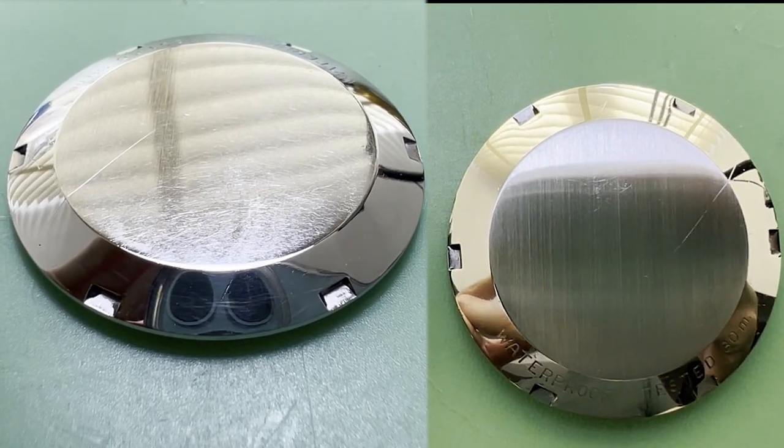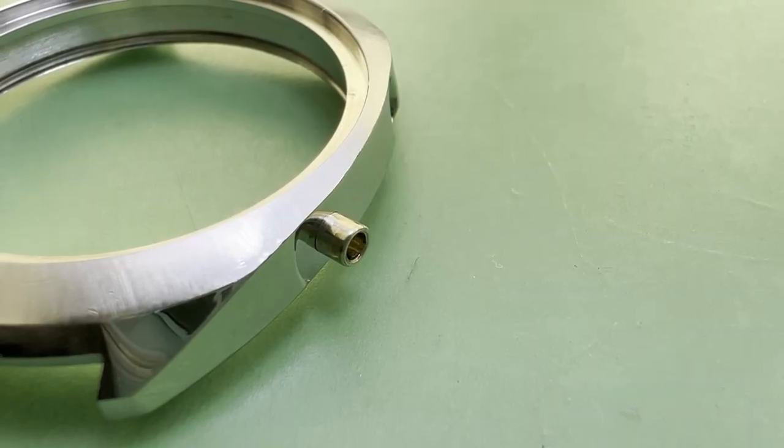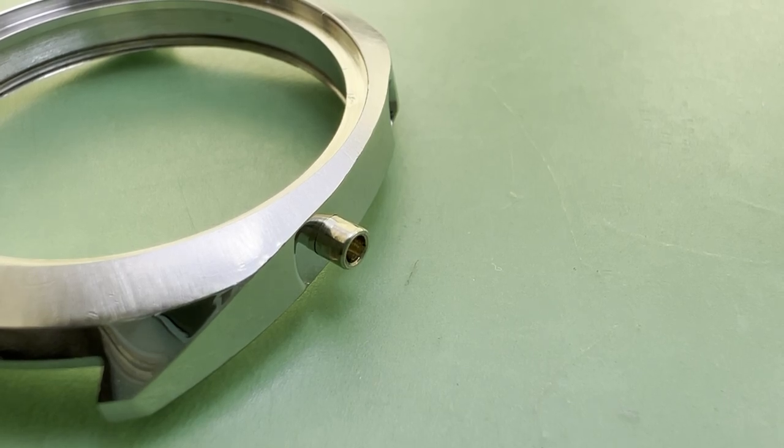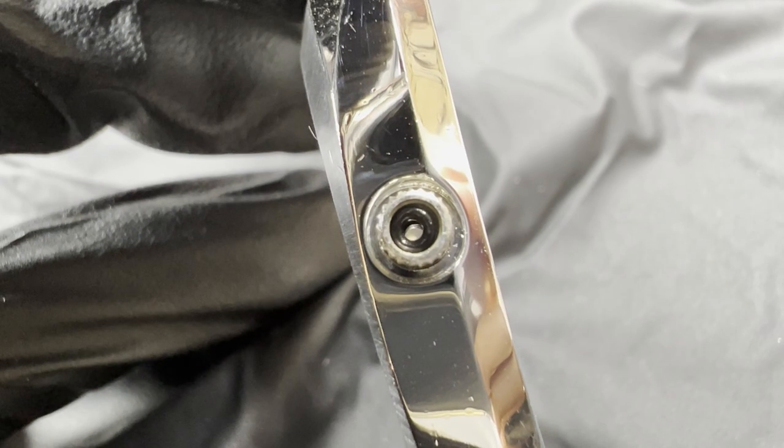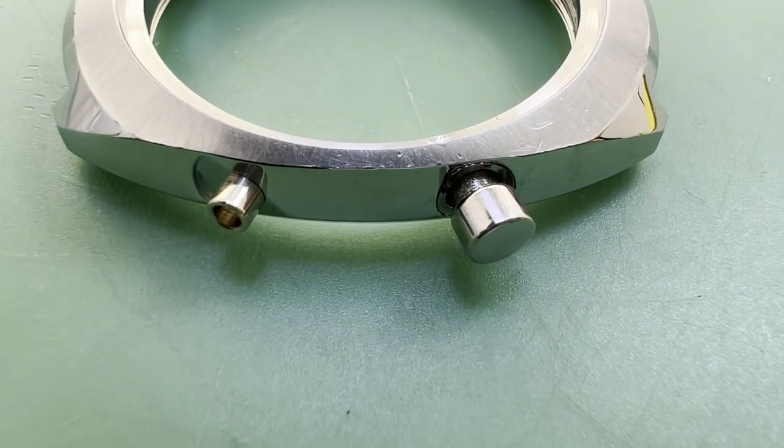Before on the left, after on the right. A new pendant tube is put on to replace the old damaged one. But the original pusher tube is put back on with a new gasket. Then the original pusher is screwed back on.